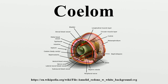According to Brusca and Brusca, the following bilaterian phyla possess a coelom: Nemertea (traditionally viewed as acoelomates), Priapula, Annelida, Sipuncula, Echiura, Onychophora, Tardigrada, Arthropoda, Mollusca, Phoronida, Ectoprocta, Brachiopoda, Echinodermata, Chaetognatha, Hemichordata, and Chordata.